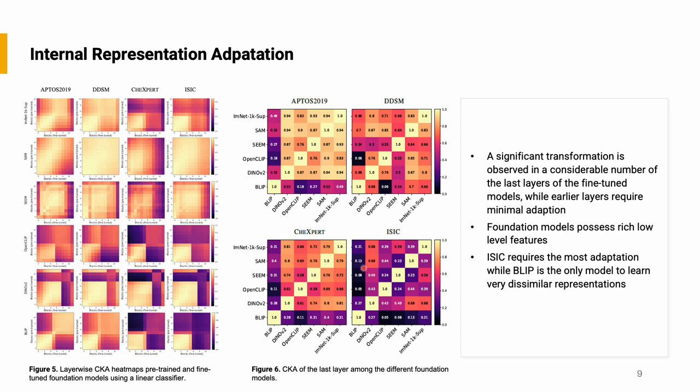When comparing just the last layers of the models, we can see that each gives unique representations. The combination of pre-training scheme, task, and architecture all result in different image representations. BLIP is the most dissimilar one among them.